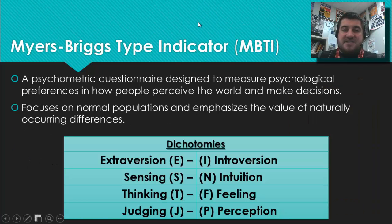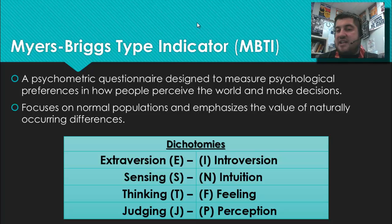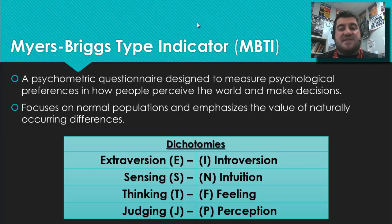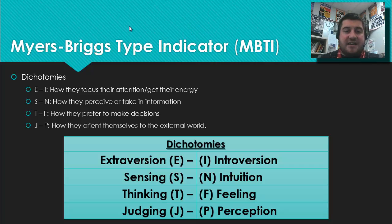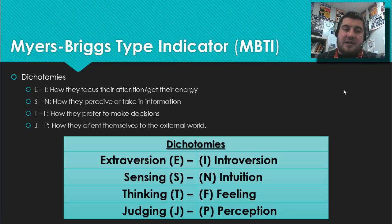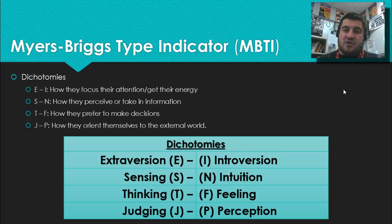The Myers-Briggs Type Indicator is designed to measure psychological preferences in how people perceive the world and make decisions. It focuses on naturally occurring differences through four dichotomies: E and I (how we focus attention and get energy), S and N (how we perceive or take in information), T and F (whether we prefer to make decisions based on thinking or feeling), and J and P (judging or perceiving — whether you want structure or prefer to move freely through the world).